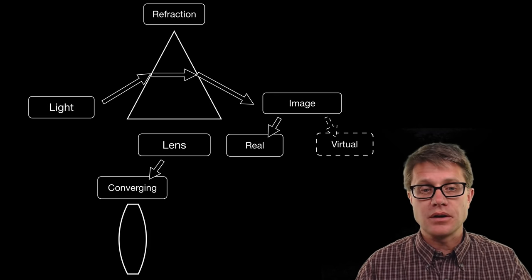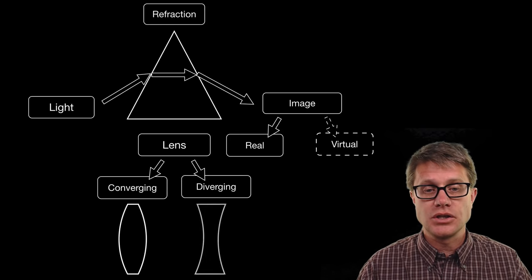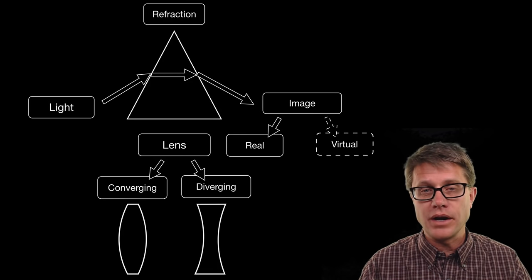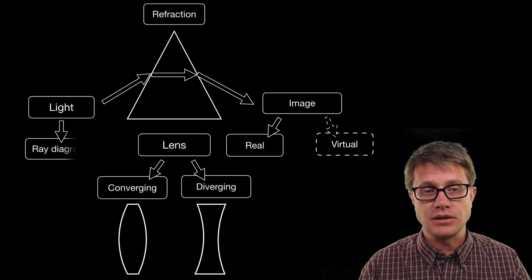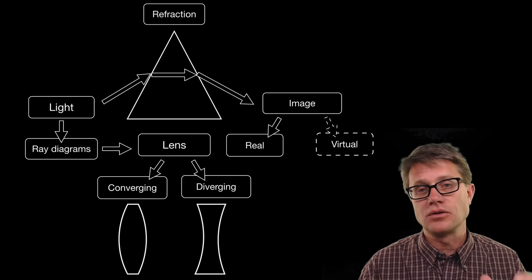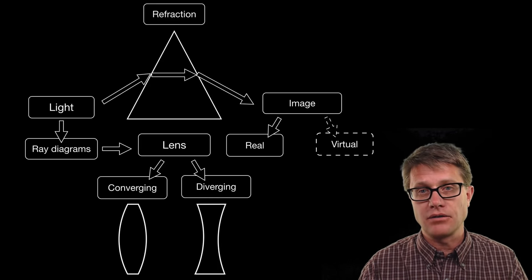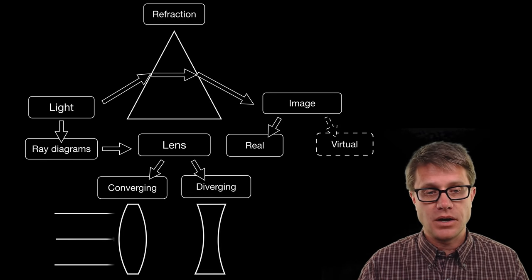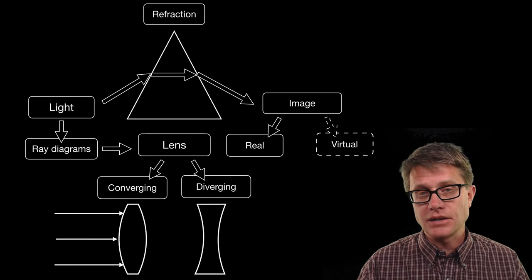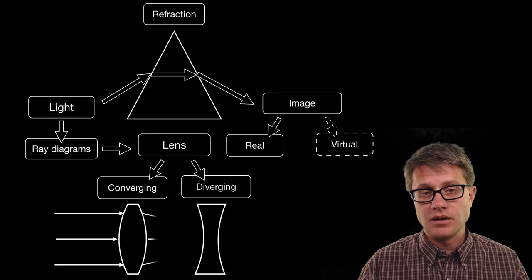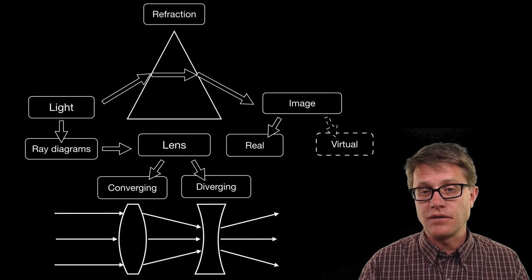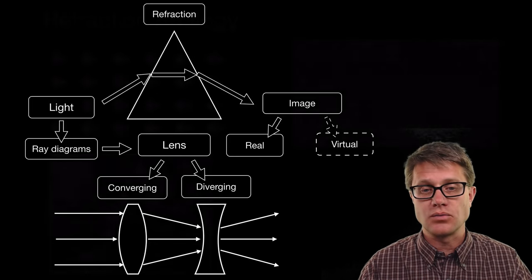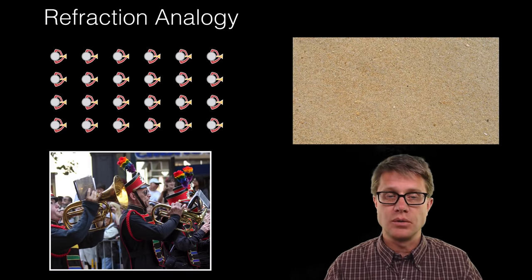The two lenses we will deal with are converging and diverging lenses. A way to figure out where the image actually is, is to use a ray diagram. We will draw just two or three rays in each of our drawings. As the rays come in they will either converge or diverge, and figuring out where they go tells us where the image is going to be.